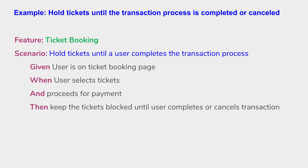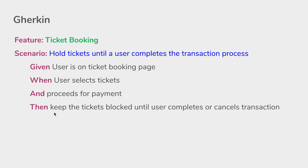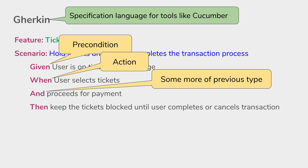If you see here, the example is created in a very structured way using some keywords. You can see we have used a keyword called 'Feature', then 'Scenario', and then the keywords 'Given', 'When', 'And', and 'Then'. This specification language is called Gherkin, and Gherkin is the specification language for BDD tools like Cucumber.